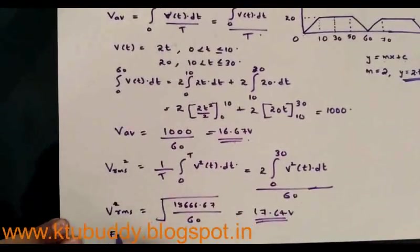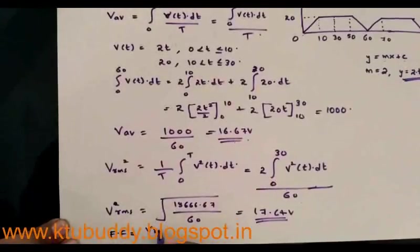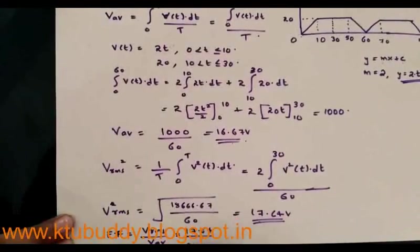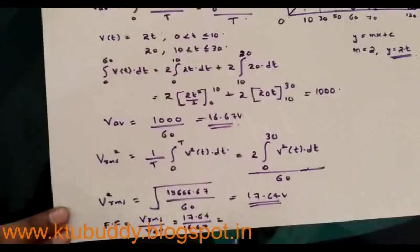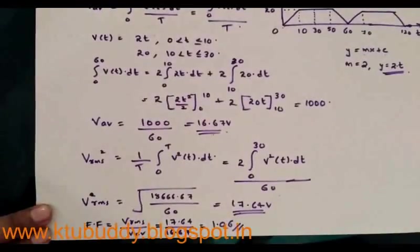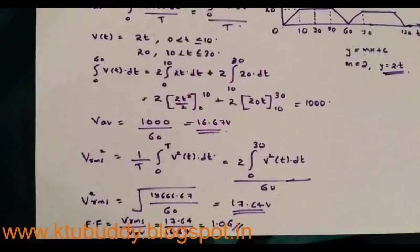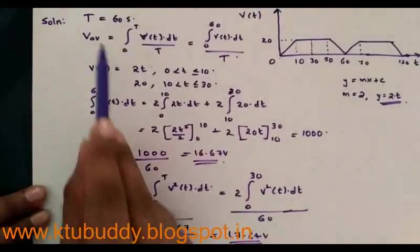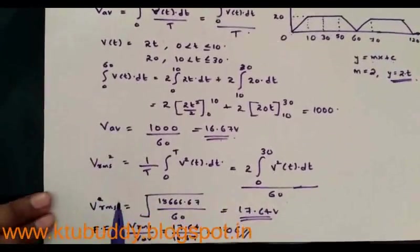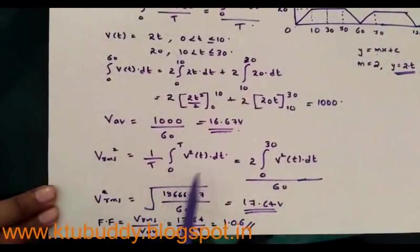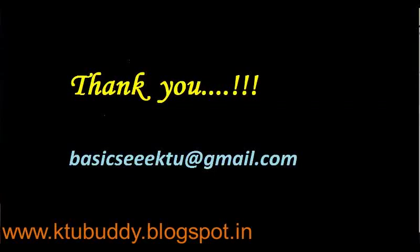Next, we determine the form factor of the waveform. The form factor is the ratio of V_RMS to V_average, which equals 17.64 / 16.67 = 1.06. So: average value = 16.67 V, RMS value = 17.64 V, and form factor = 1.06. The two basic equations are V_average = (1/T) × integral of v(t) dt, and V_RMS² = (1/T) × integral of v²(t) dt. Thank you.